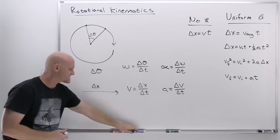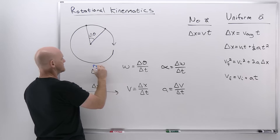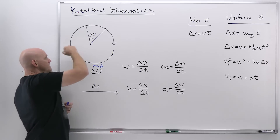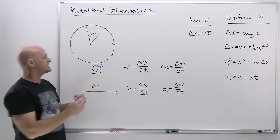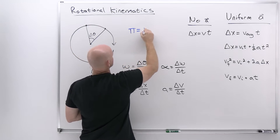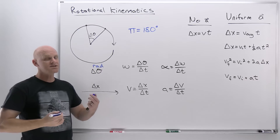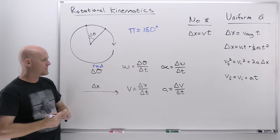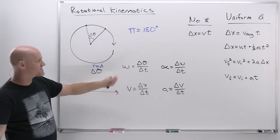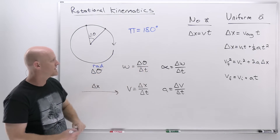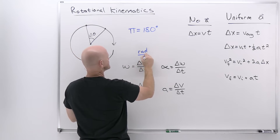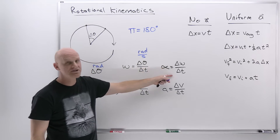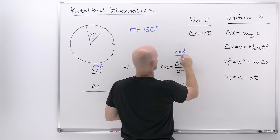For units: angular displacement is in radians — one full circle is 2π radians, a half circle is π radians, and π radians equals 180 degrees — that's our conversion between radians and degrees. Angular velocity is radians per second (delta theta over delta t). Angular acceleration is the change in angular velocity over time, giving us radians per second squared.